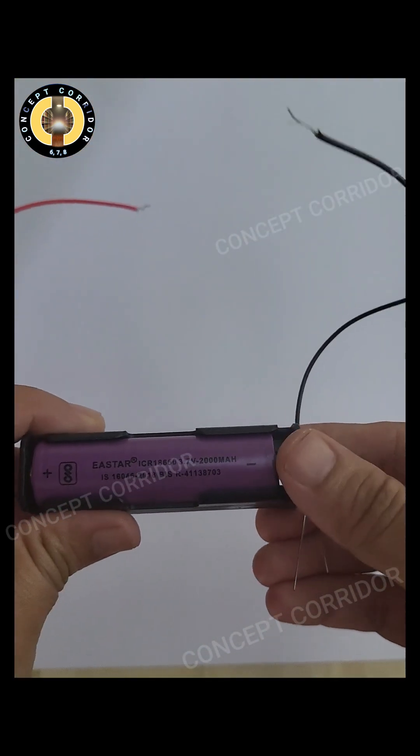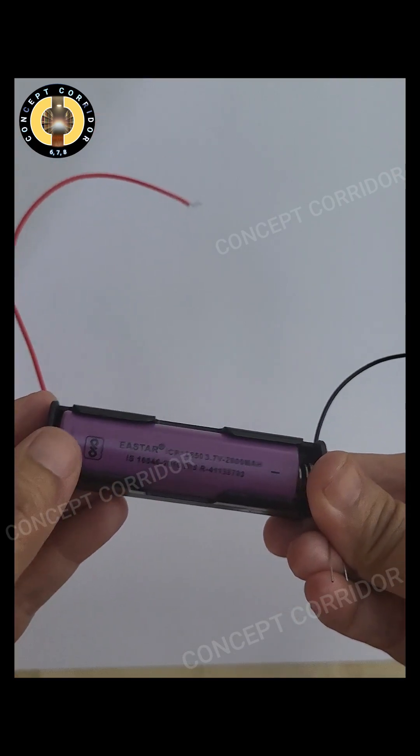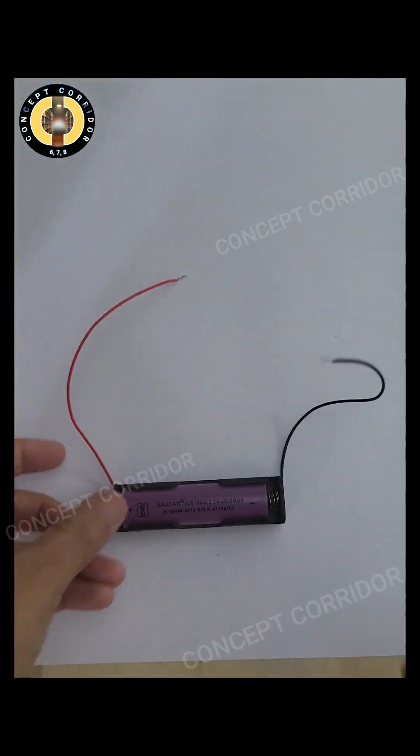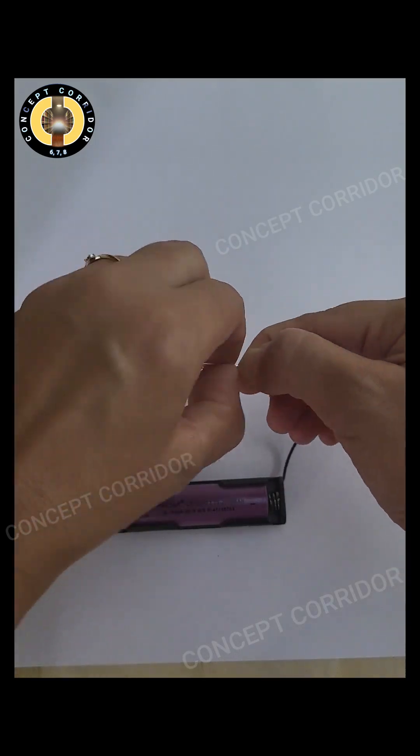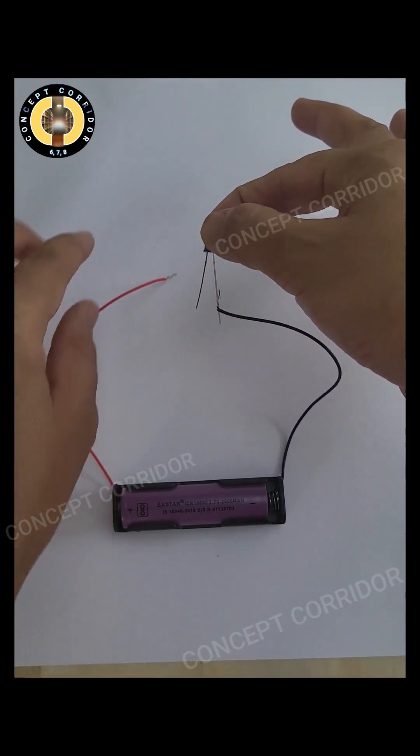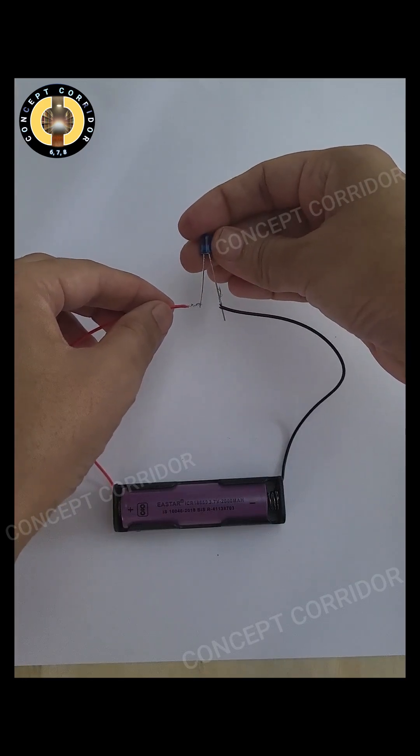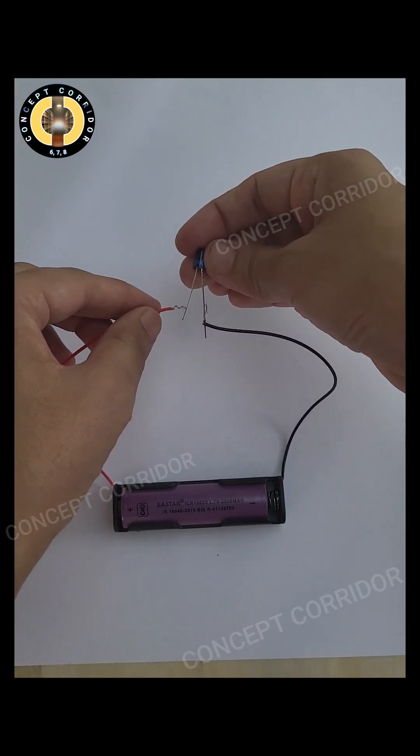Let's make a similar circuit for LED also. I have taken a cell in this cell holder. I am going to join the negative terminal of the cell to the longer wire of LED. Now, joining the positive terminal of the cell to the shorter wire of the LED. You can see LED is not glowing.